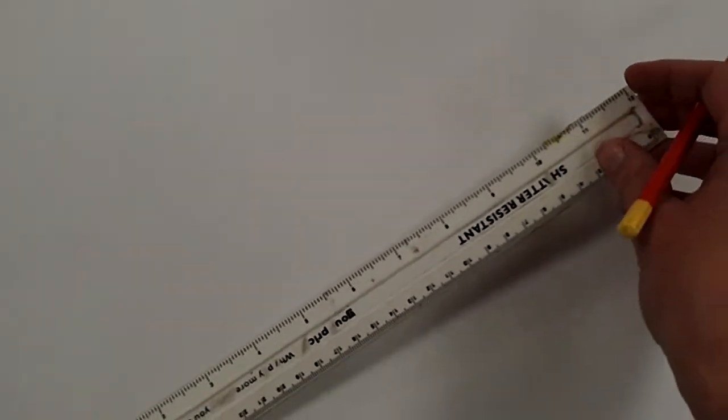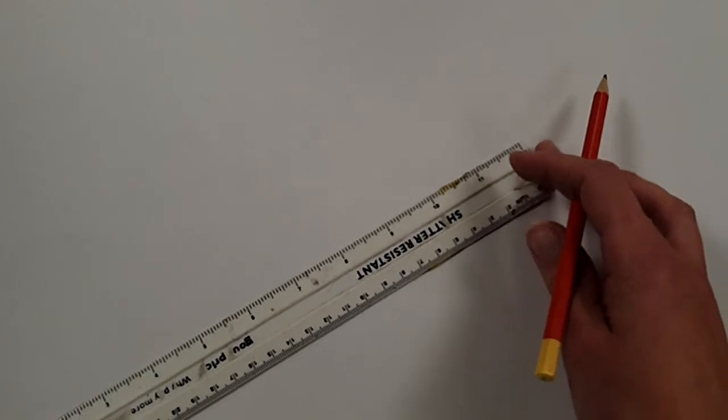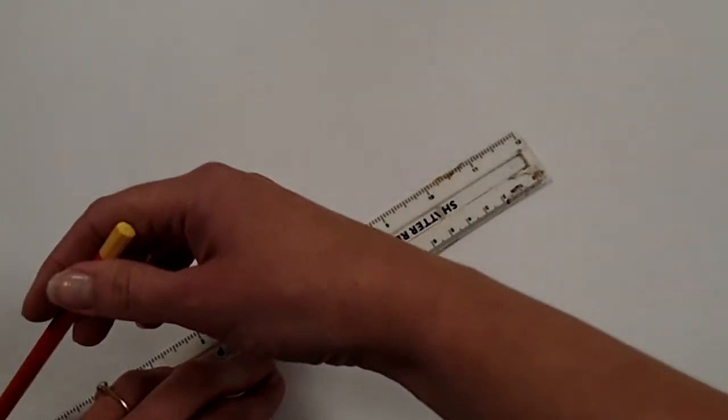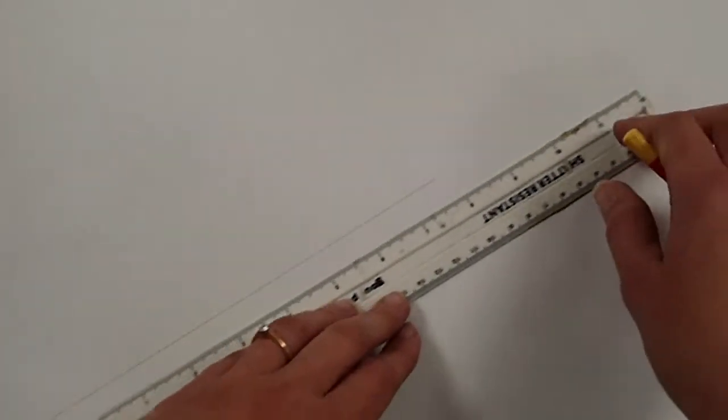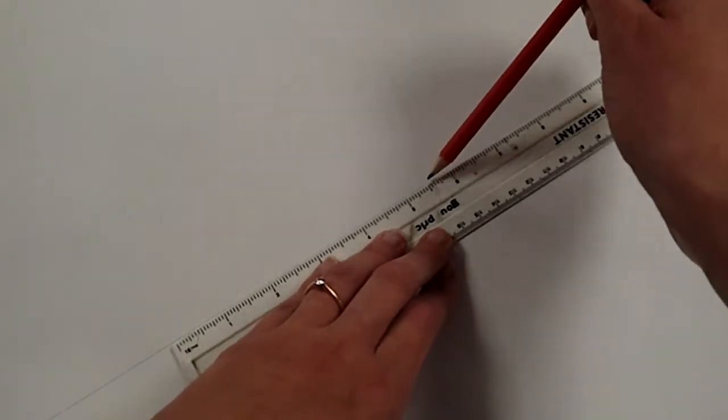I'm going to take a ruler and pencil, and the first instance is I'm going to pop a nice diagonal line across my surface. Now because this is temporary on the paper, I just want to make sure it's nice and light. I don't want to do any permanent lines, so just a very faint line all the way across the side.